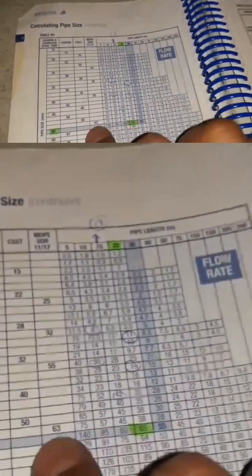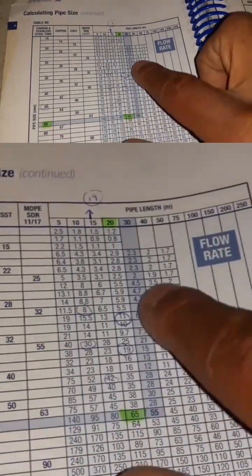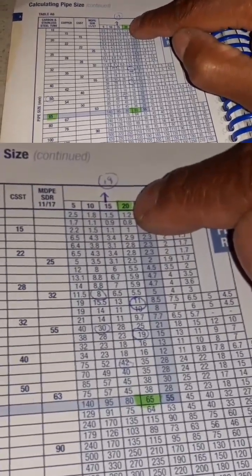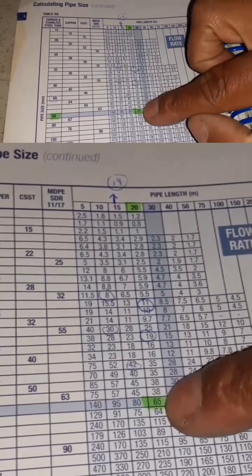We turn over the page and it shows you here: 65 millimeter will get us to 20 meters straight line of gas and give us this flow rate.